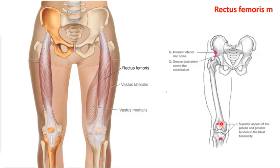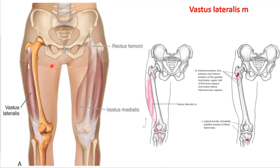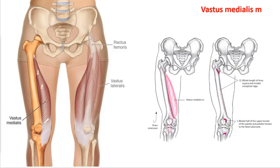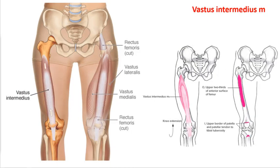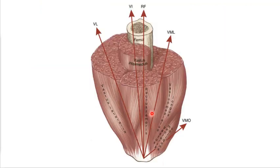The rectus femoris crosses the hip at the AIIS, attaches to the top of the patella and tibial tuberosity, and has a moment for knee extension. The vastus lateralis on the lateral side pulls the patella laterally, while the vastus medialis pulls the patella medially. They converge and become the same tendon. You can see some of these medially and laterally directed forces based on the patella.